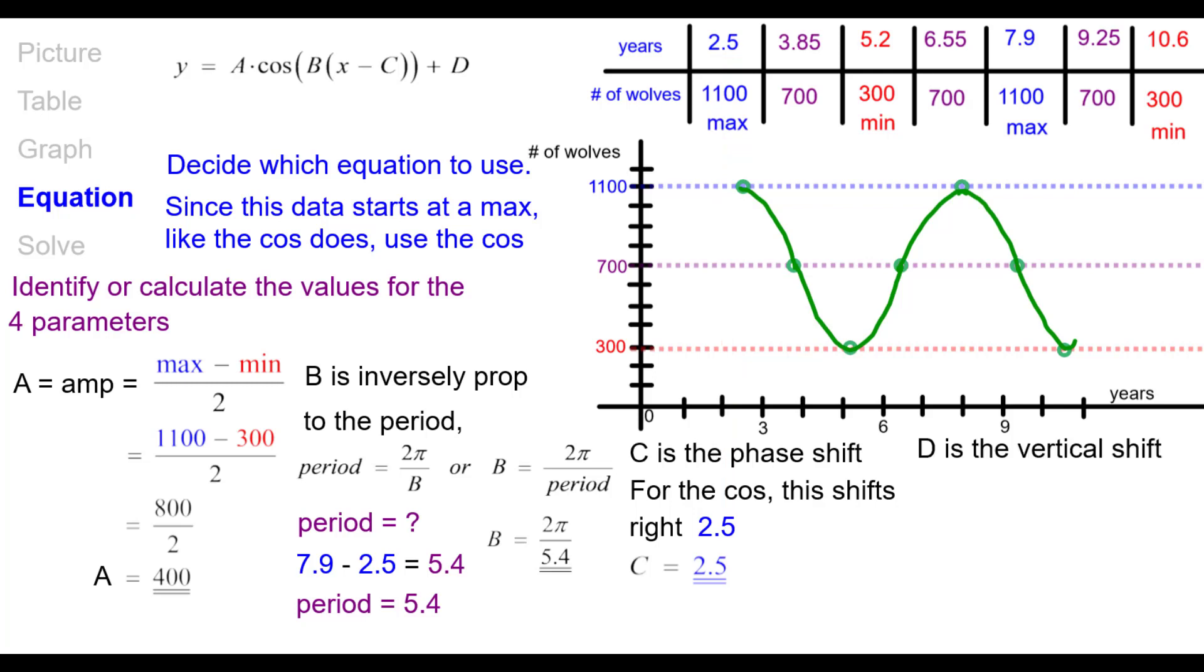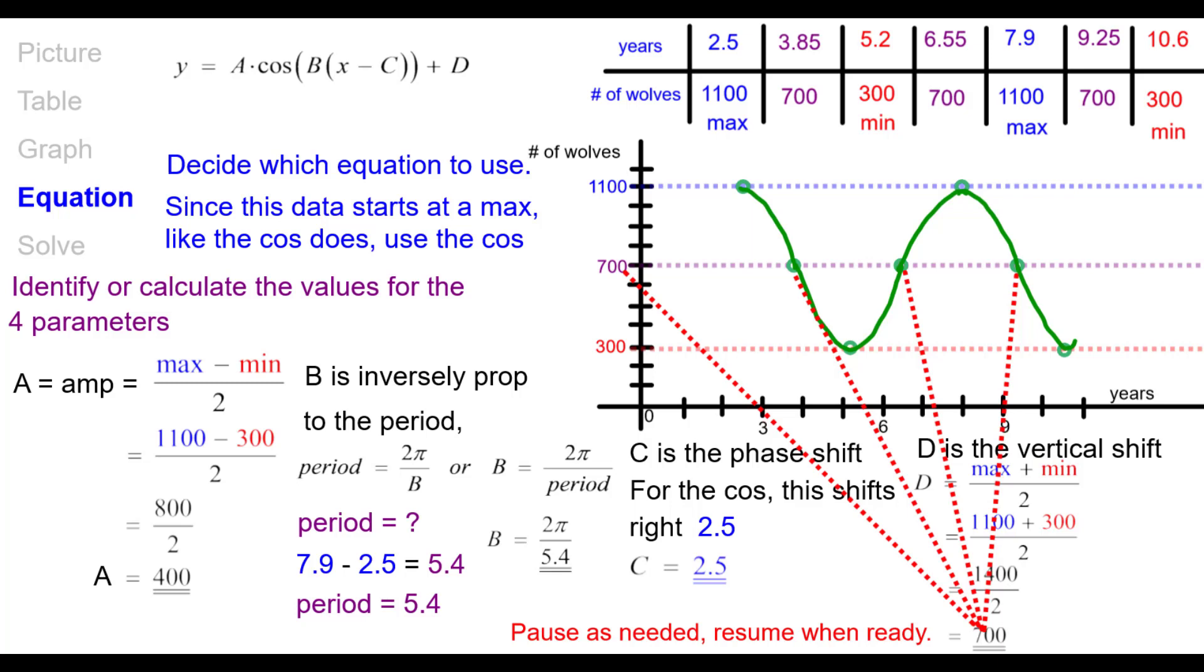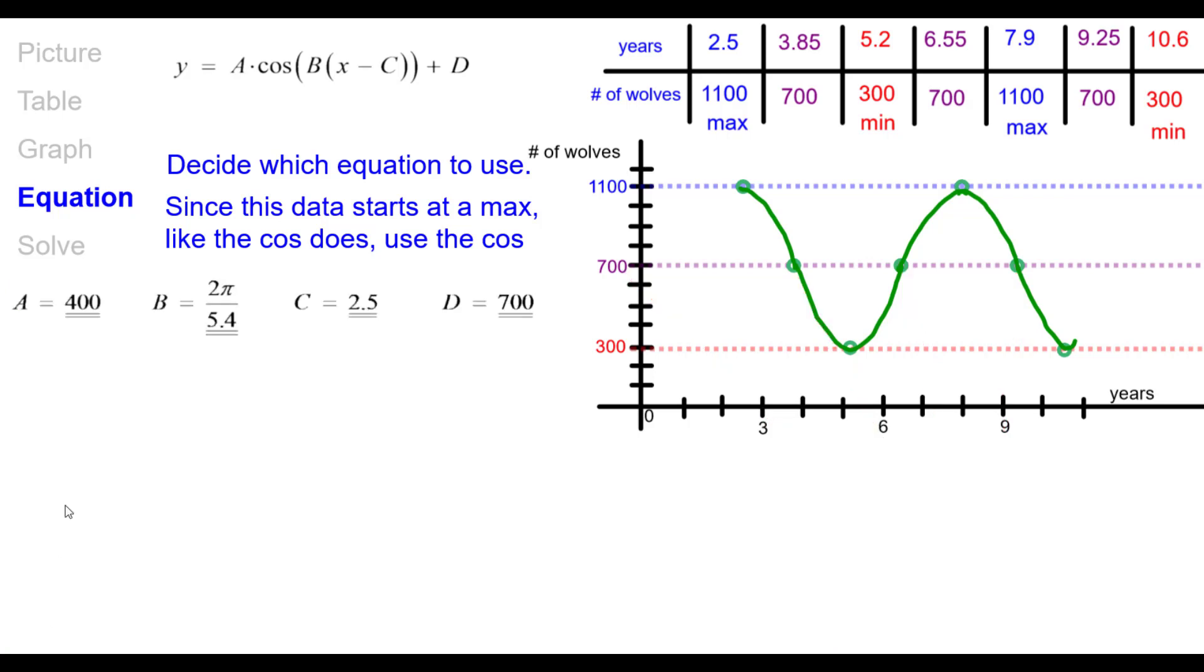D is the vertical shift. And that's found by taking the average of the max and min. So if you add those up and divide by 2, you get 700. Which again is the line containing the points of inflection. So here we have our collection of four values. We're going to go ahead and substitute into this general equation. And we get this is our equation right here. Pause as needed.